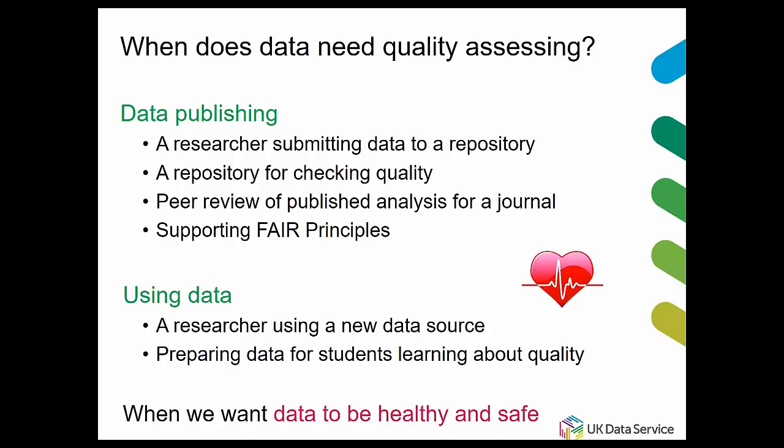So why do we need to assess data quality? If we're publishing data and we are a researcher who's created a dataset and we're submitting it to a repository, we don't want to send dirty data over. If we're a repository receiving data, we want to be checking the quality. Peer reviewers are checking data coming in for published analysis, maybe doing some reproducibility on the code, but they want to look at the dataset as well. Checking data quality supports the FAIR principles — that's findable, accessible, interoperable, reusable. It's also useful when you're using data for the first time, downloading a new data source to check whether it's got errors. And if you're trying to teach students around data quality or creating numeric datasets, it's very useful to show the kinds of things that can go wrong.